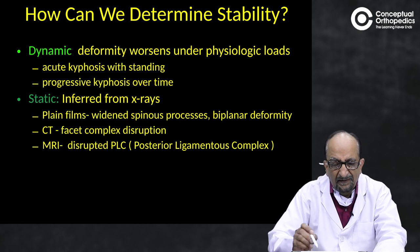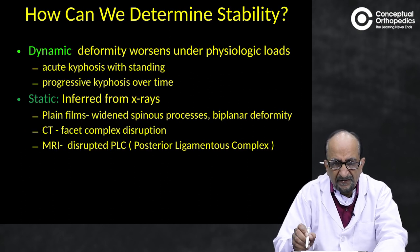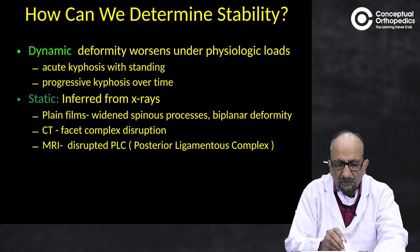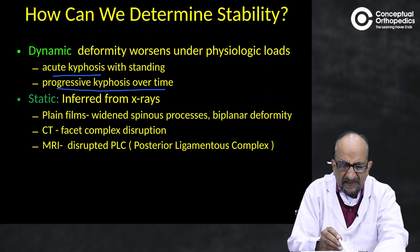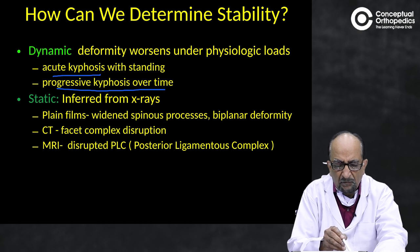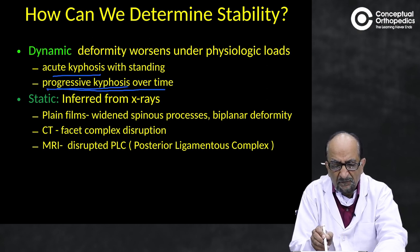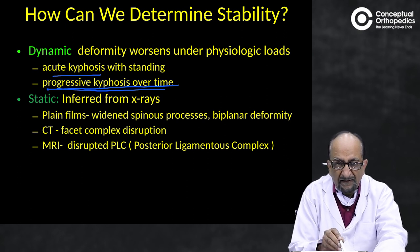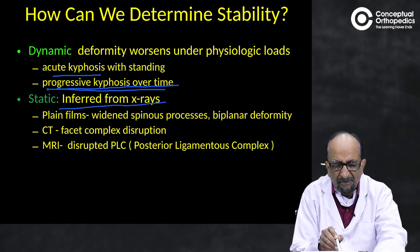Stability can be assessed dynamically — that is, deformity worsens under physiological loads. When a person stands up, acute or progressive kyphosis may appear over time. We can do an X-ray now and again after two years and find progressive kyphosis, telling us that stability is worsening. But nowadays, with a simple plain X-ray, we can also find out if a person is prone towards instability.